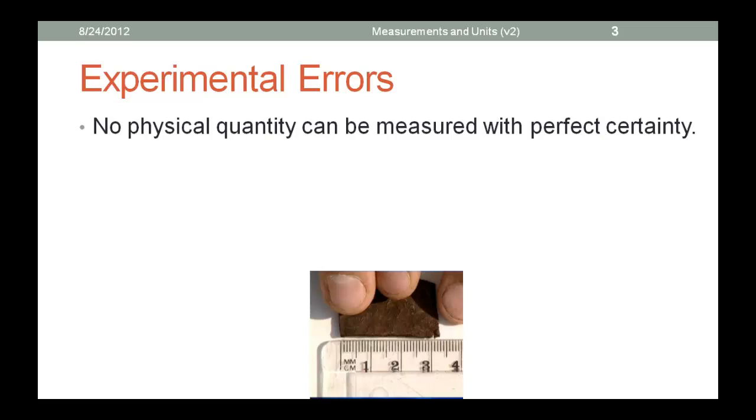It is impossible to make an exact measurement. No physical quantity can be measured with perfect certainty. We're going to discuss more on that. Therefore, all experimental results are wrong. Just how wrong they are depends on the kinds of errors that were made in the experiment.